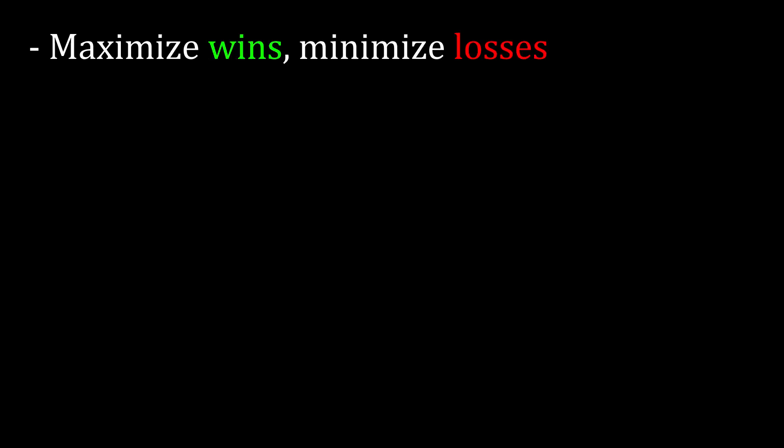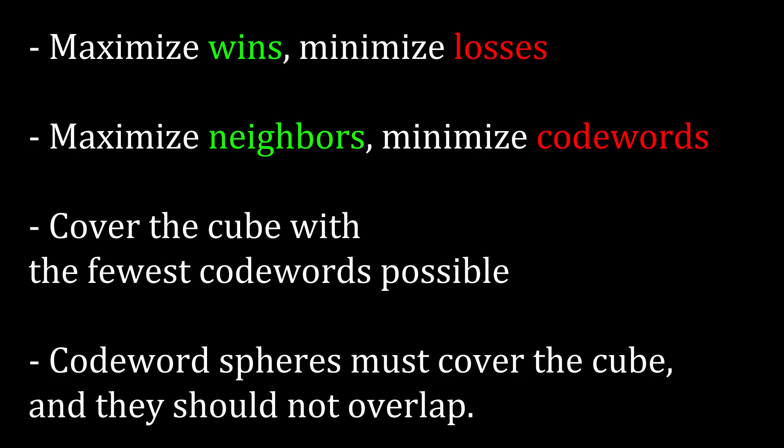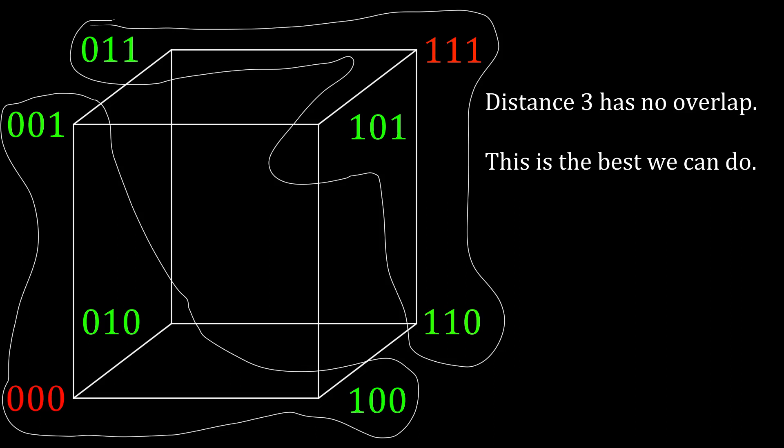How do we arrange codewords? We want a strategy that maximizes wins and minimizes losses — as few codewords as possible covering as many points as possible. Intuitively, we don't want the spheres to overlap. One way to ensure the spheres don't overlap is to set a minimum distance between codewords. If two codewords have distance 2, there is a third point with distance 1 from both — a mutual neighbor — which means there is overlap. But if two codewords have distance 3, there cannot be a mutual neighbor, so there cannot be overlap. So we set the minimum distance to 3. That is why 000 and 111 are a good pair of codewords — they have Hamming distance 3 from each other, so their spheres do not overlap.